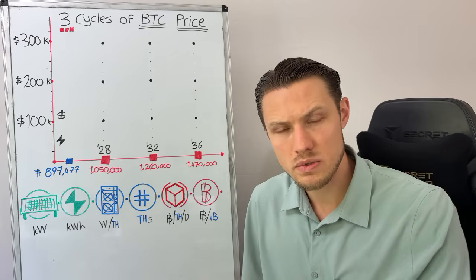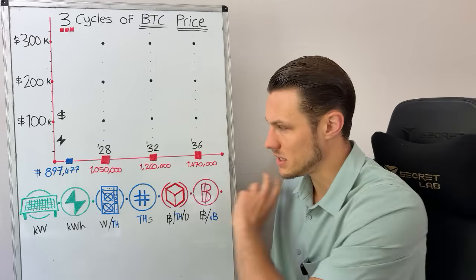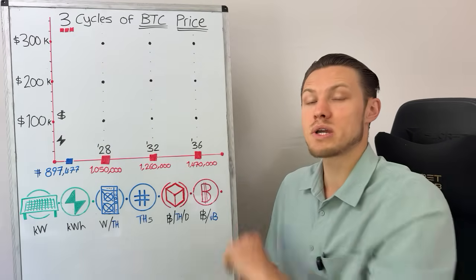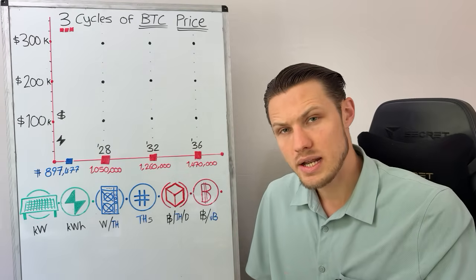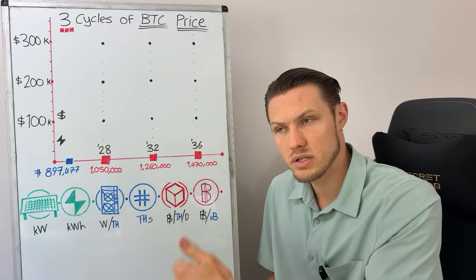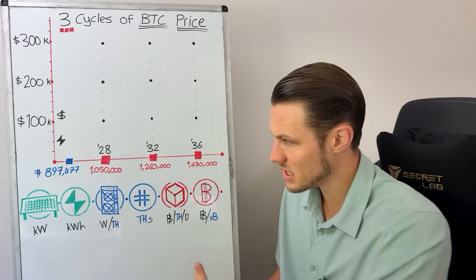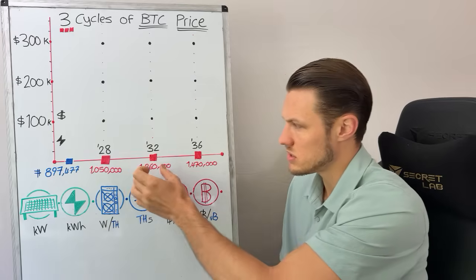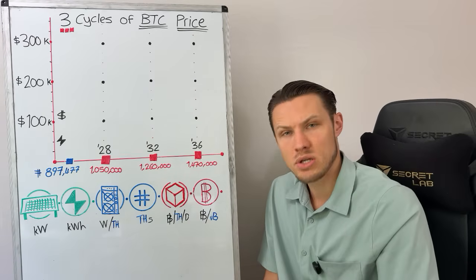Hello there and welcome to the HashPower Academy, your place to learn anything and everything to do with Bitcoin from the fundamentals. Now, the topic of today's video, we're going to look at the three cycles of Bitcoin going into the future. So that being up to 2028, 2032, up to 2036 and beyond.